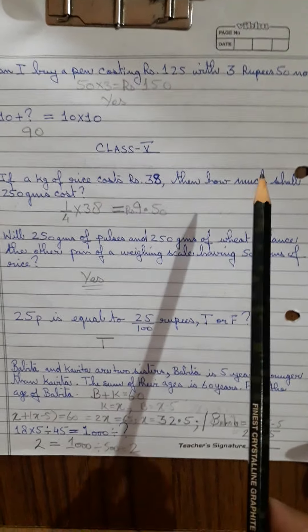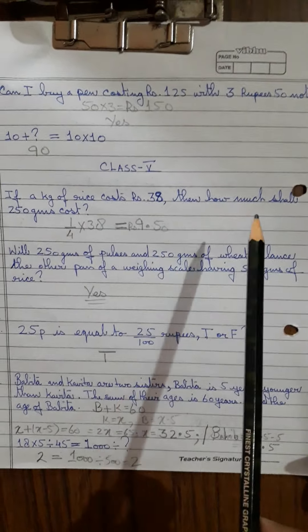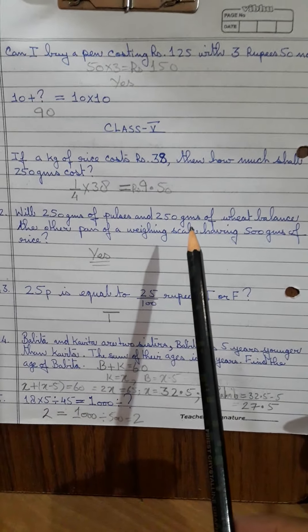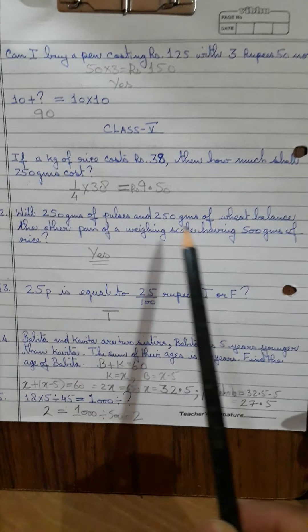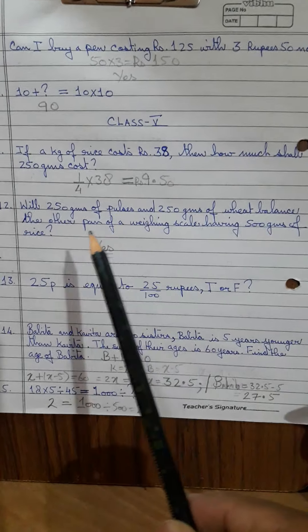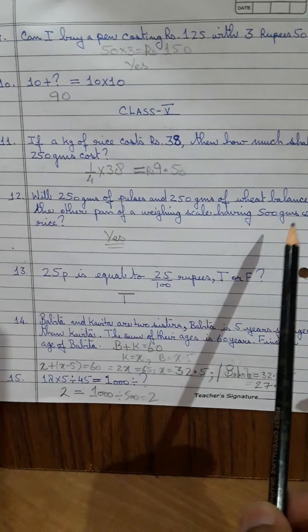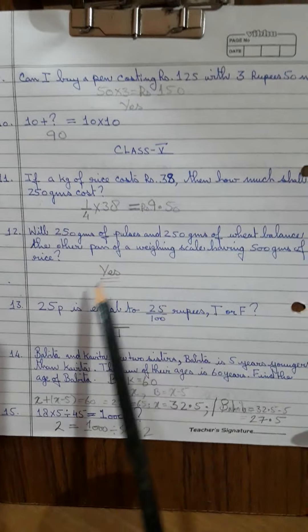4 nines are 36 and you get a 2, and 4 fives are 20. Will 250 grams of pulses and 250 grams of wheat balance the other pan of a weighing scale having 500 grams? Yes, of course, 250 plus 250, 500 grams you have kept on this and 500 is there. So it will be an equal scale. Yes.